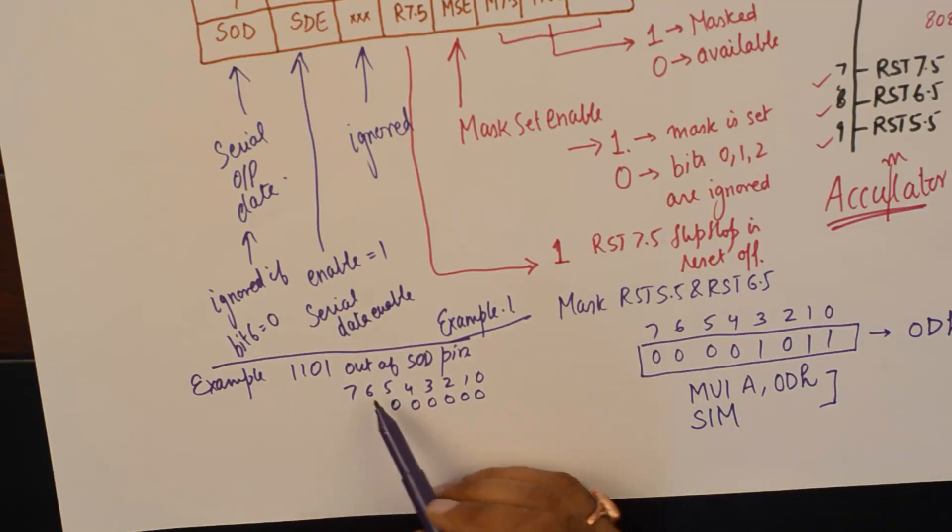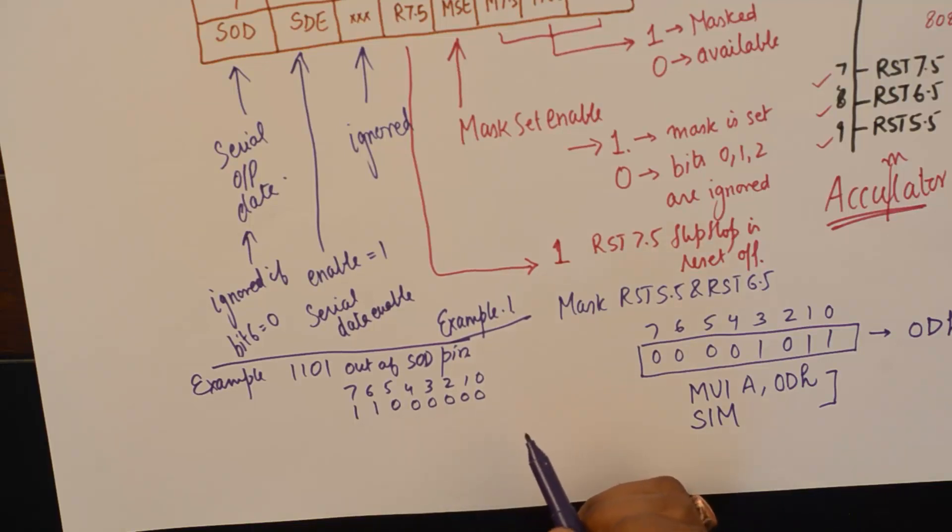And I wish to send serial data. So I will make it 1 serial data enable. Now, first I want to send 1. We will start from the least significant bit. So I will first put a 1 here and I will find out the code.